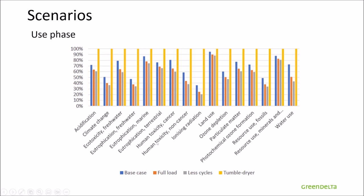By adding the tumble dryer, the electricity consumption of the washing machine increases, raising the impact in every category compared to the base case. By washing clothes at full load, the impact decreases a bit in every category, because it allocates some of the impact to the other clothes in the washing machine. By washing less — 26 instead of 52 times — the impacts also decrease in every category. Knowing this, we can explore additional scenarios modifying electricity consumption, such as washing temperature, which the tumble dryer scenario demonstrates has very significant impact.